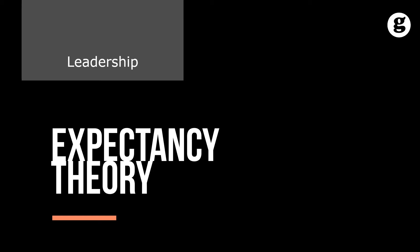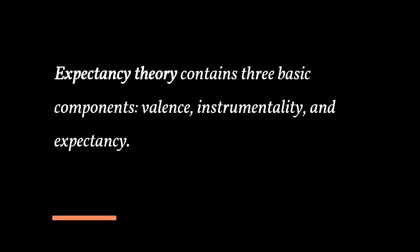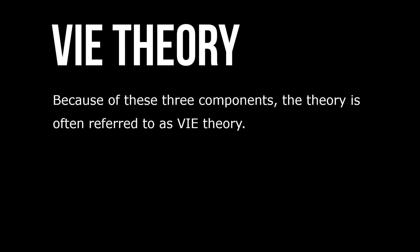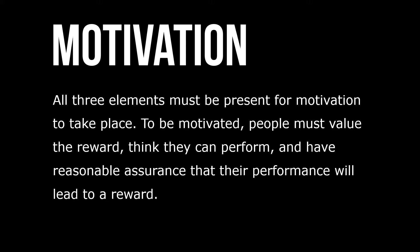Let's take a look at Expectancy Theory. Expectancy Theory contains three basic components: valence, instrumentality, and expectancy. Because of these three components, the theory is often referred to as VIE Theory. All three elements must be present for motivation to take place.